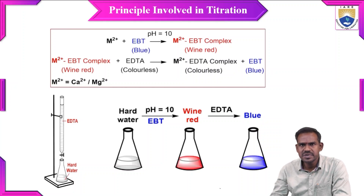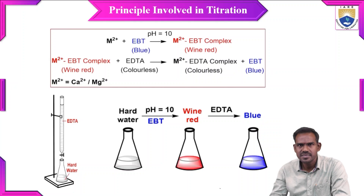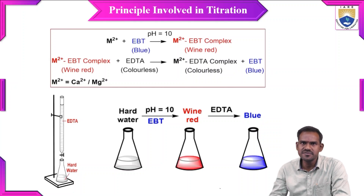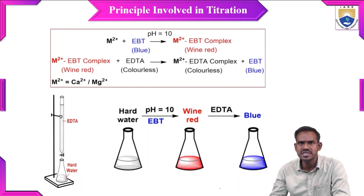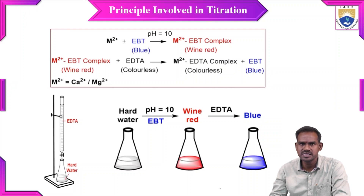Why does EDTA replace EBT? Because the EBT complex is unstable whereas the EDTA complex is stable. The reason for the stability of the EDTA complex is that it provides six donor atoms — a hexadentate ligand gives more stability to the complex. Therefore EDTA complex is more stable and has the capacity to replace the EBT ligand. That is the actual principle involved in this titration.